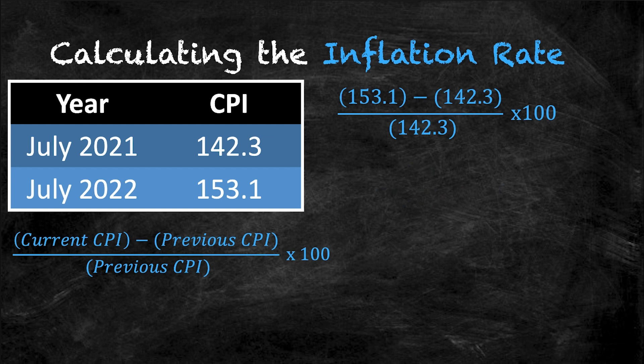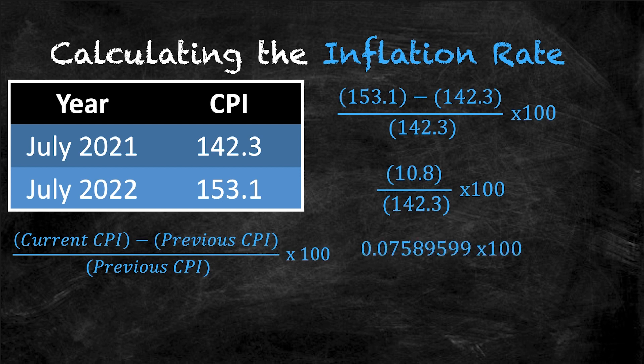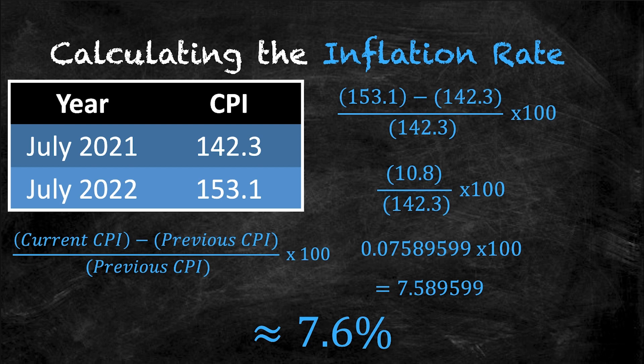So 153.1 minus 142.3 is 10.8. All of this over the CPI for July of 2021 times 100 will yield a result of 0.07589599. Multiplying by 100 and then rounding, we get approximately 7.6%.